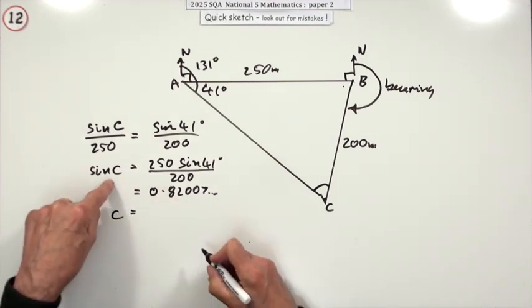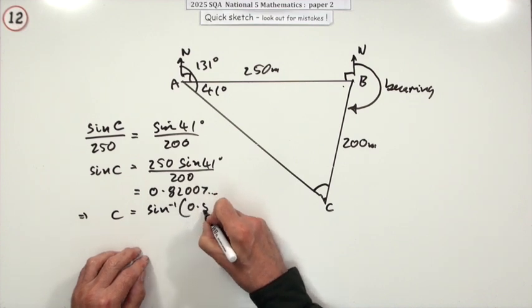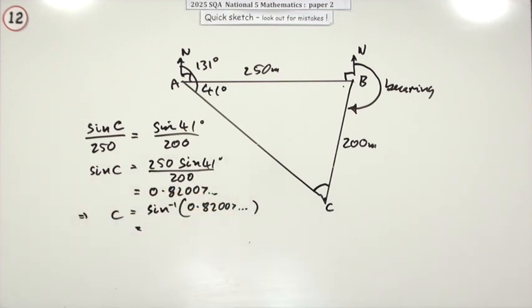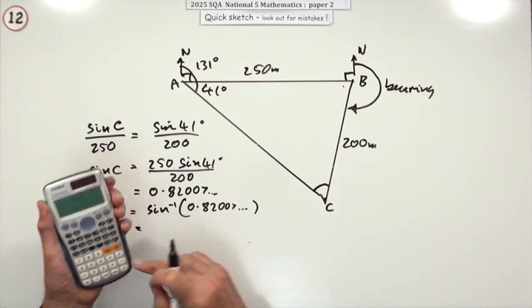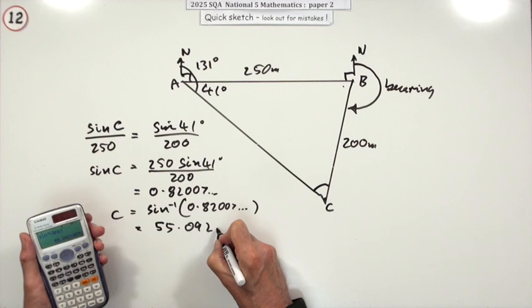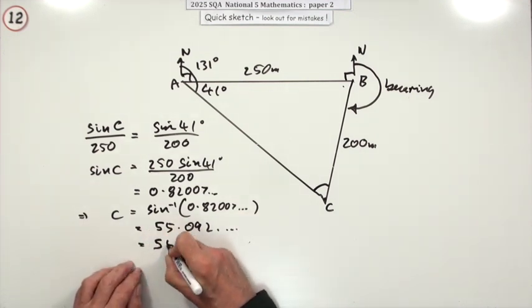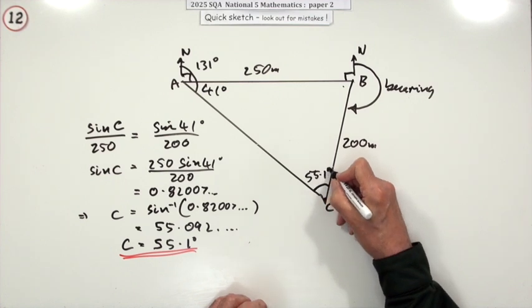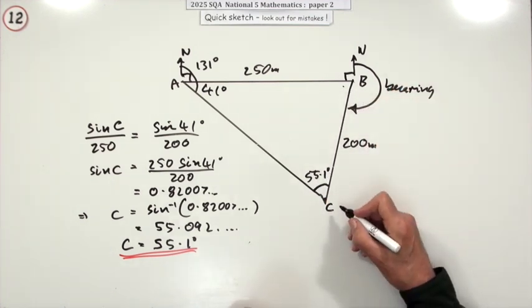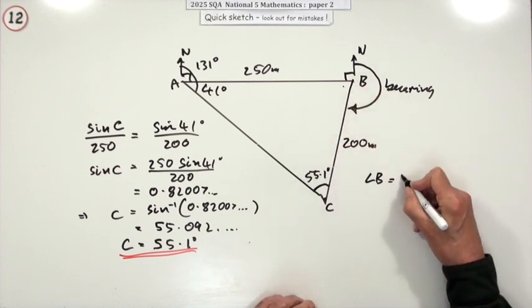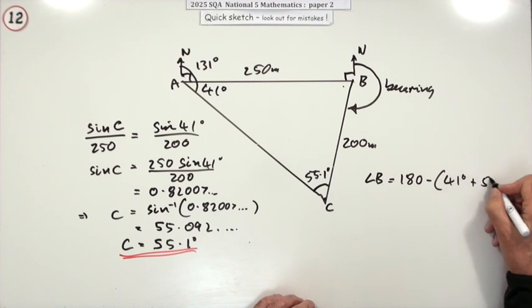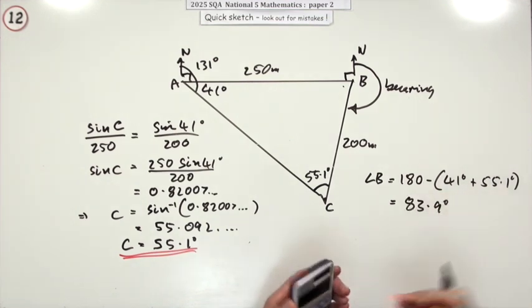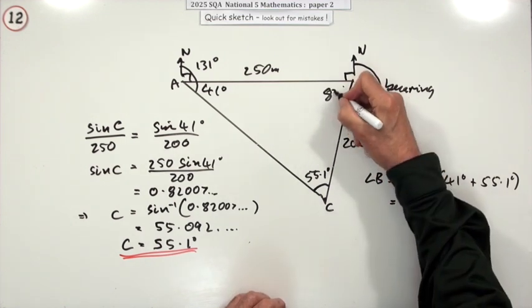Which means that c is going to be the inverse sine of that. I'm just keeping it all in because I'm going to use the answer function. I'm just going to do inverse sine answer because that's still in the calculator. And if you do that, you get 55.092 and so on. So I'll just call that 55.1 degrees. Now you can work your way around. So from that, I can get this. So I'll call that angle b. Angle b is going to be 180 minus the sum of those two. So 83.9.